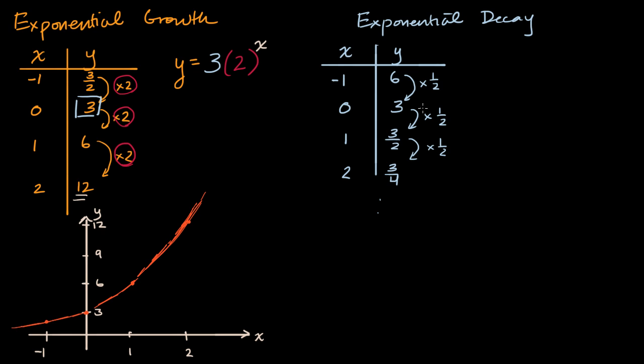And so how would we write this as an equation? I encourage you to pause the video and see if you can write it in a similar way. Well, it's going to look something like this. It's going to be y is equal to, you have your y-intercept here, the value of y when x is equal to zero, so it's three, times, what's our common ratio now? Well, every time we increase x by one, we're multiplying by one half. So one half, and we're going to raise that to the x power.